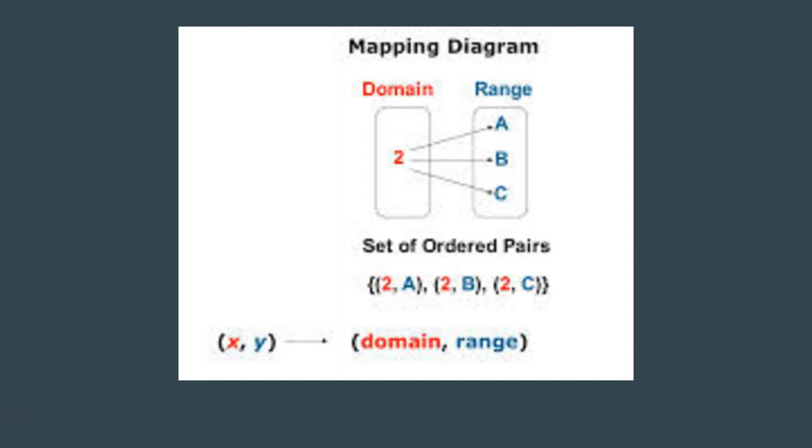There's a couple different things of just how we say things. We can map a diagram. What it means by mapping a diagram is when we have a domain and we have a range. Notice how this 2 connects with A, the 2 also connects with B, and the 2 also connects with C. It is written as 2, A, 2, B, 2, C. The domain is always going to be your x, and the range is always going to be your y.